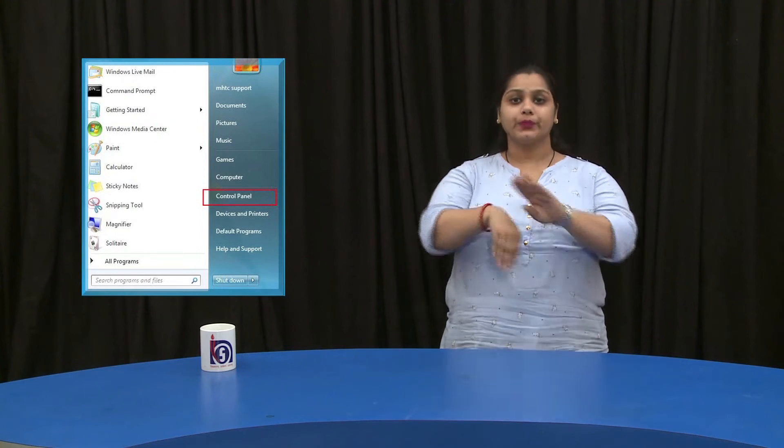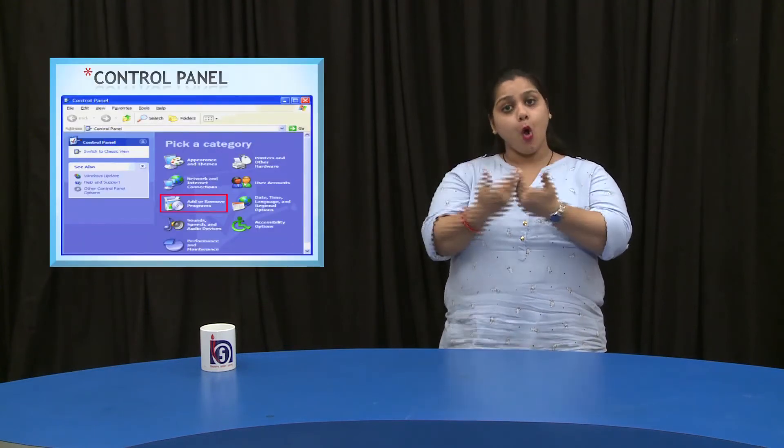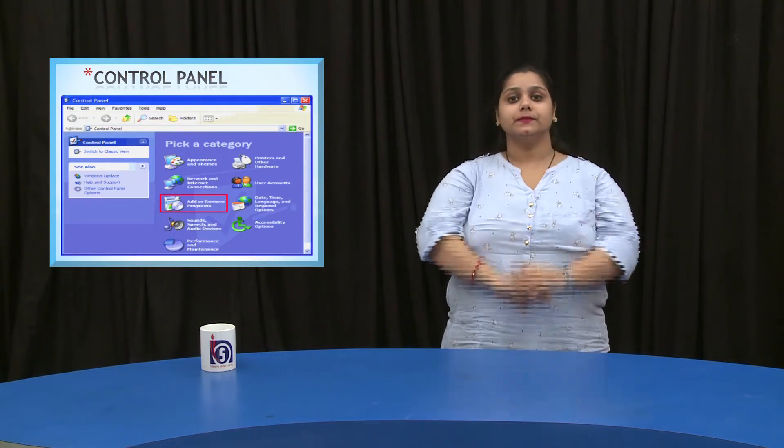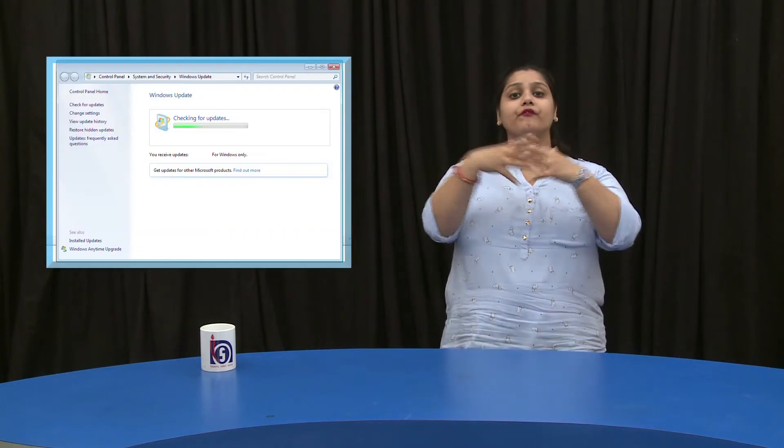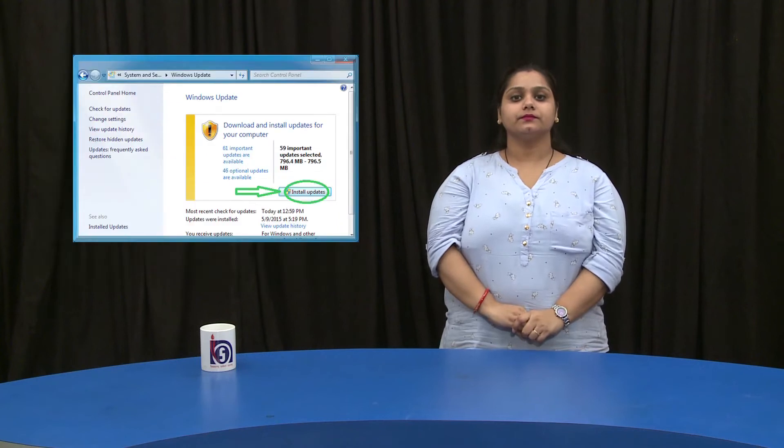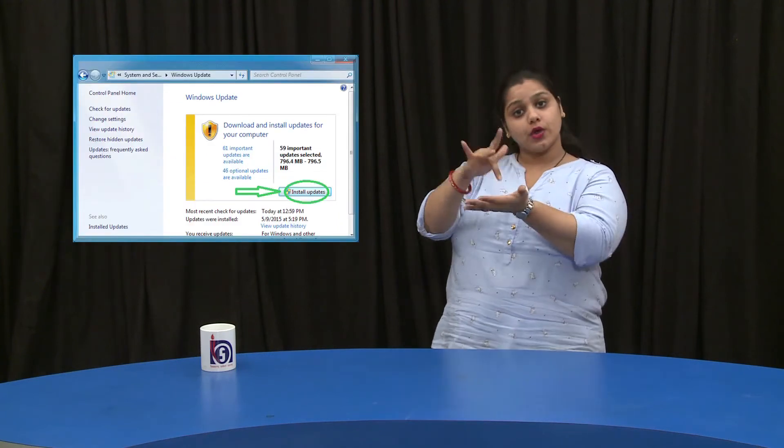Then double click add or remove programs. Click Windows Update. Follow the instructions to locate and install new Windows feature.